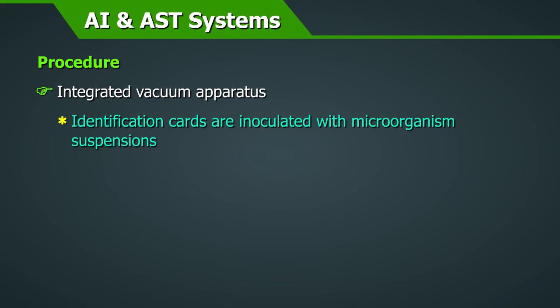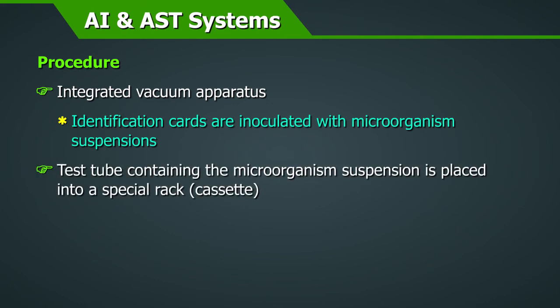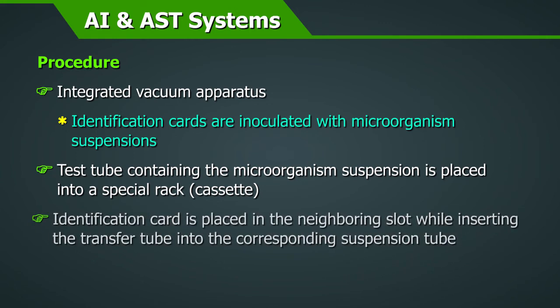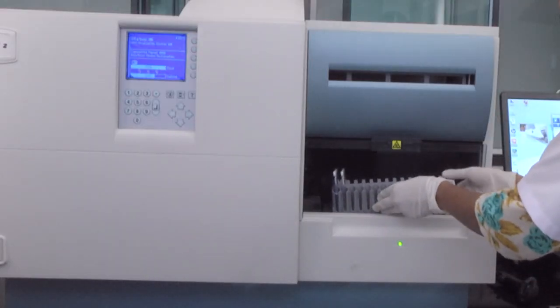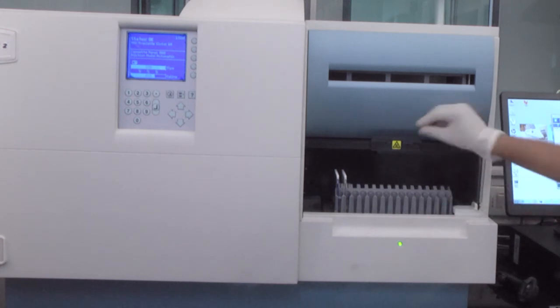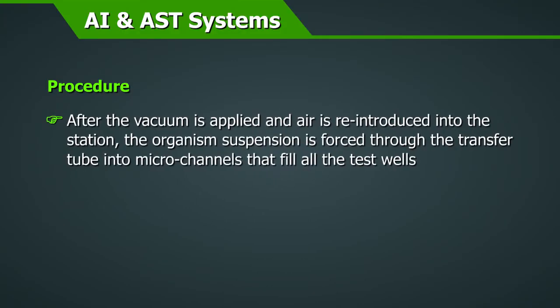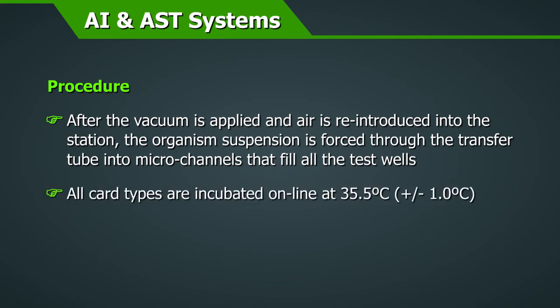Identification cards are inoculated with microorganism suspensions using an integrated vacuum apparatus. A test tube containing the microorganism suspension is placed into a special rack or cassette, and the identification card is placed in the neighbouring slot while inserting the transfer tube into the corresponding suspension tube. The filled cassette is then placed either manually or transported automatically into a vacuum chamber station. After the vacuum is applied and air is reintroduced into the station, the organism suspension is forced through the transfer tube into micro channels that fill all the test wells. All card types are incubated online at 35.5 ± 1 degree centigrade.